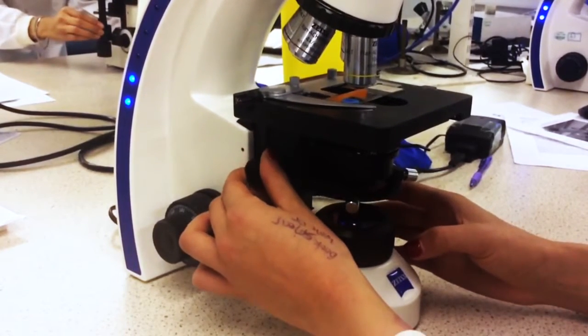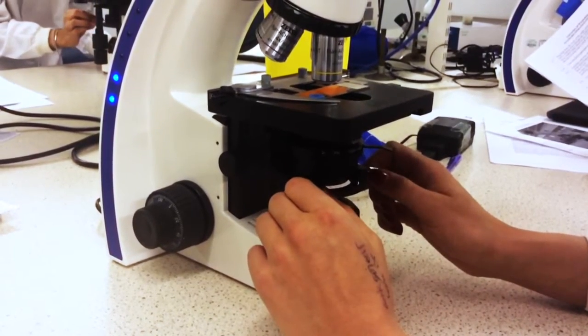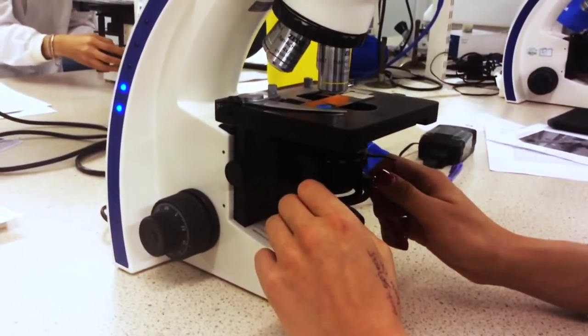Carefully rack the condenser up and down using the condenser wheel. Doing so, a black outline infringing on the field view will appear. Use the condenser centering screws to make the field diaphragm image concentric with the edge of the field of view.